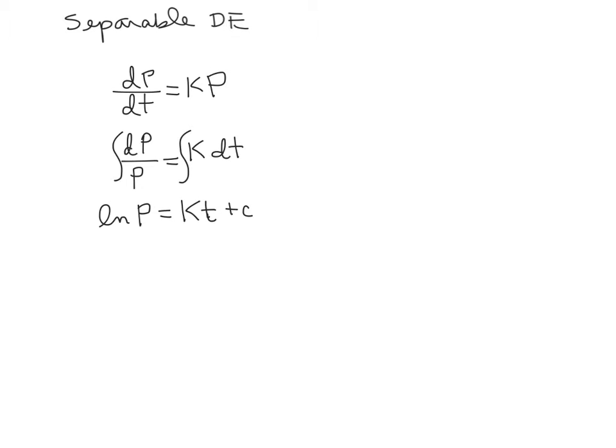So now if we want to solve for P, what we would do is exponentiate both sides, because E and natural log undo each other, so we get P equals e to the KT plus C. This, if you use exponential rules, equals e to the KT times e to the C.